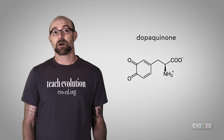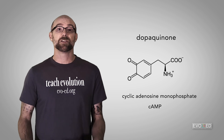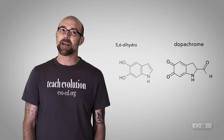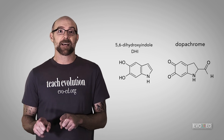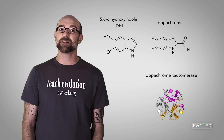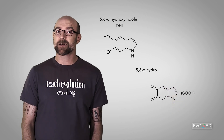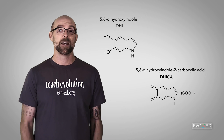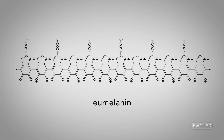If there are high levels of a molecule called cyclic adenosine monophosphate, or cAMP, the dopaquinone gets converted into a molecule called dopachrome. Dopachrome will naturally break down into 5,6-dihydroxyindole, or DHI. But if it comes into contact with an enzyme called dopachrome tautomerase, or DCT, it gets converted into 5,6-dihydroxyindole-2-carboxylic acid, or DHICA. DHI along with DHICA then combine to form the eumelanin polymer.